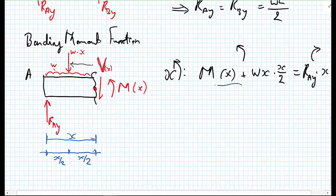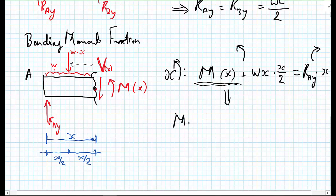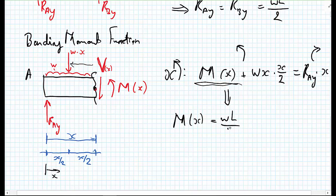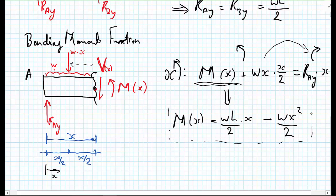Tidying up and substituting RAY equals wL/2, we get the moment as a function of the distance x along the beam: M(x) equals wLx upon 2 minus wx² upon 2. We now have a function for the bending moment as a function of distance along the beam x.